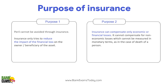So what is the purpose of insurance? Peril cannot be avoided through insurance. Insurance cannot make the peril go away. But the loss that happens due to the peril, that can be compensated. So insurance can try to reduce the impact of financial loss on the owner and the beneficiary. That's point number one — peril cannot be avoided; the insurance only provides financial compensation to reduce the loss.